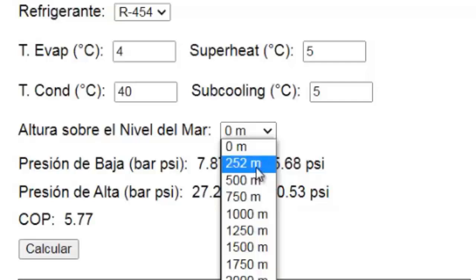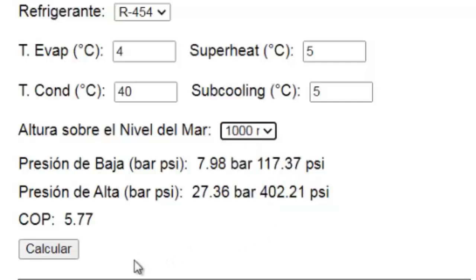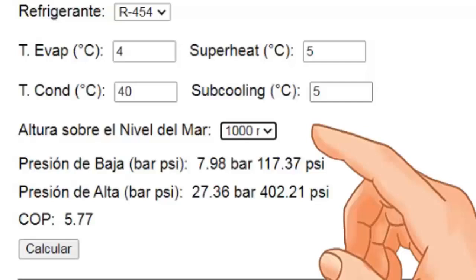Therefore, the pressure shown on the gauge will vary from one location to another. For example, at 1,000 meters above sea level, both low and high pressures adjust to the values shown on the screen.